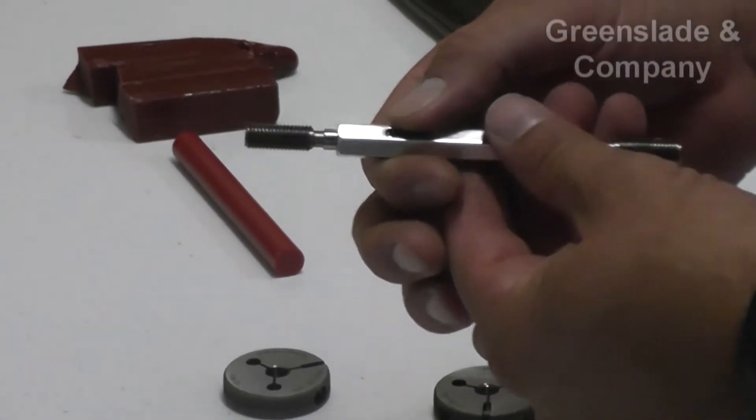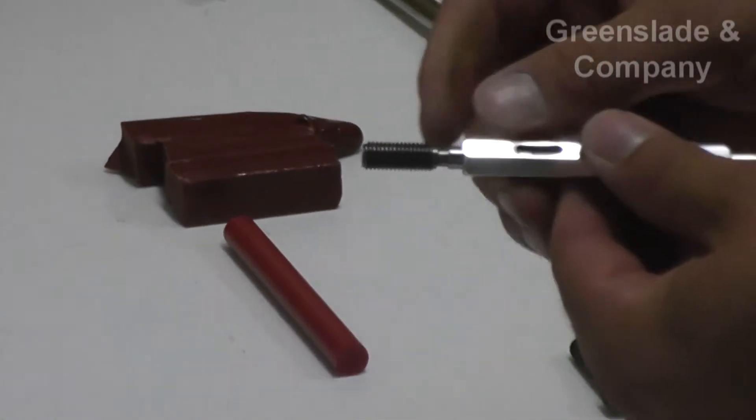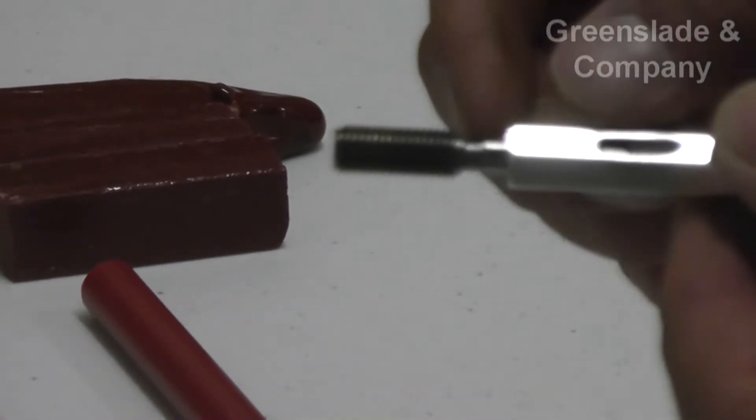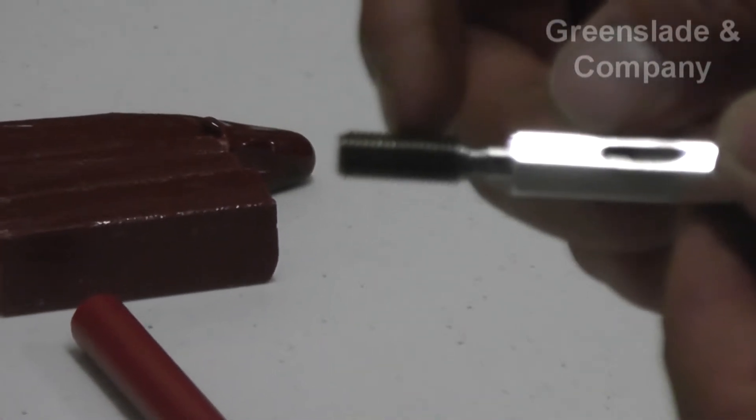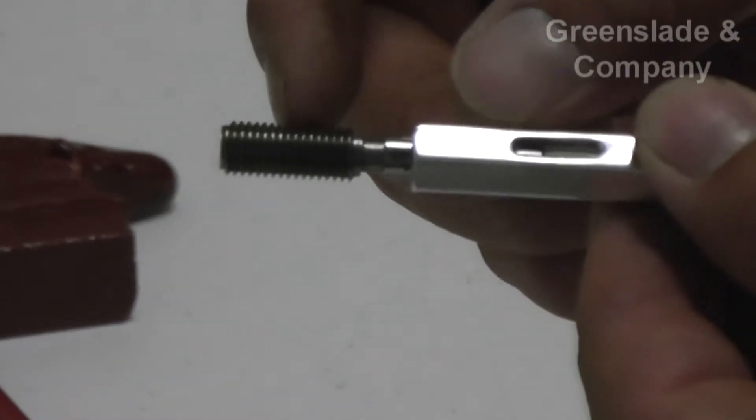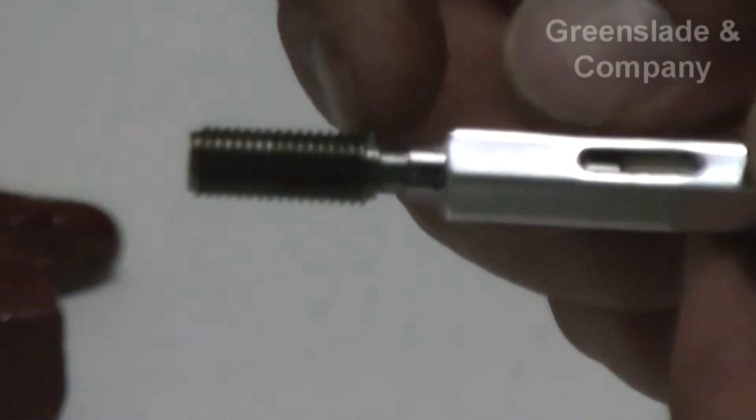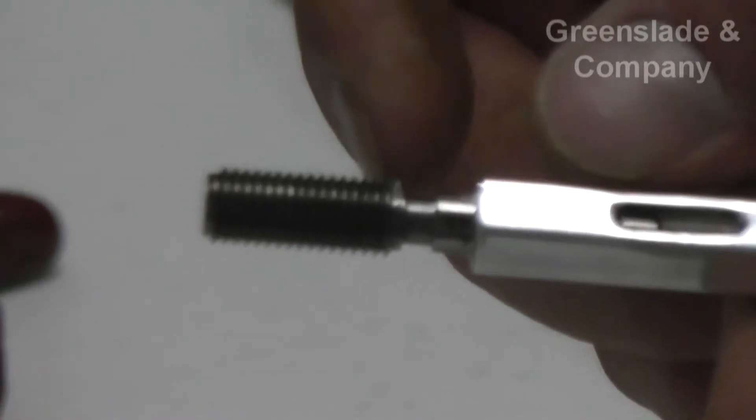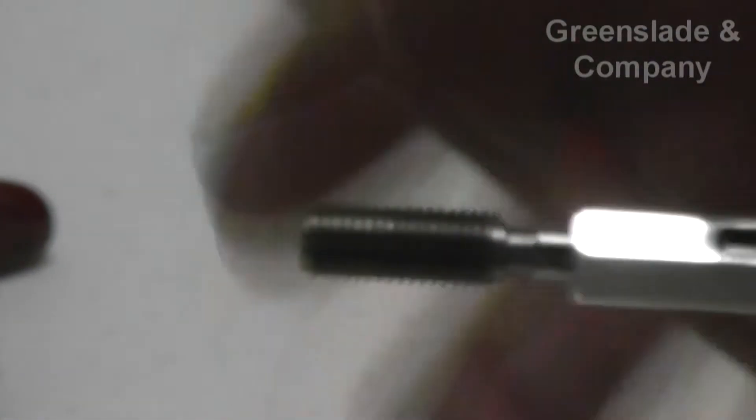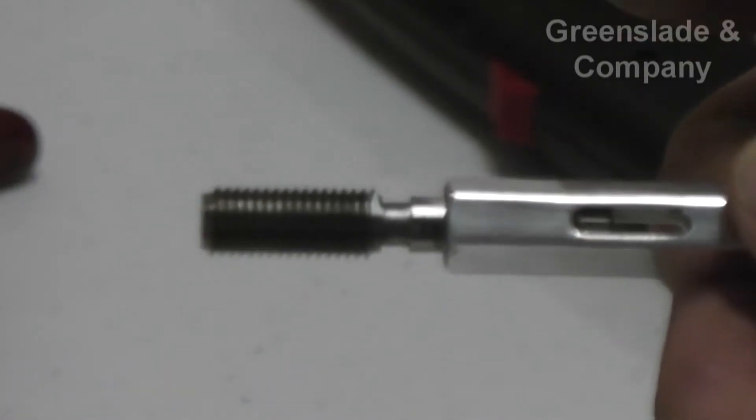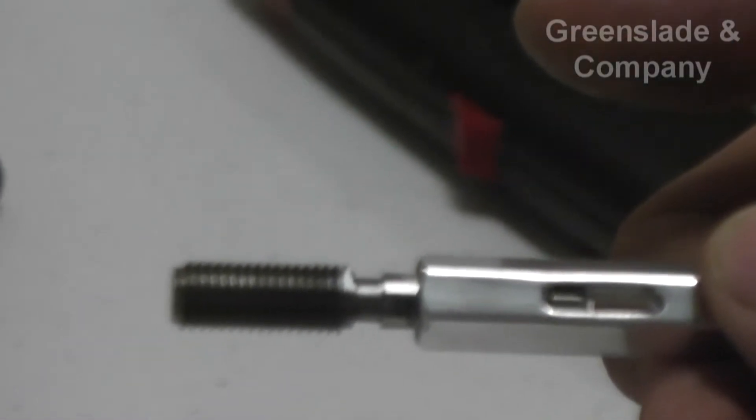You've got a length of thread. This front section up to about midpoint is called your truncated section, and the back section all the way to the back here is called your full form section. You want to set your ring to your full form section, and then your truncated section will evaluate any flank wear that happens to be on those ring gauges.